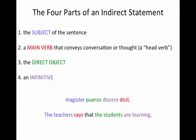In Latin we need to find our four parts of an indirect statement. You need to find the subject of the sentence, which remember could be implied in the main verb. You need a main verb that conveys conversation or thought — I like to call it a 'head verb,' some process that you use your head for: speaking, thinking, talking, etc. You also need to find your direct object and an infinitive.